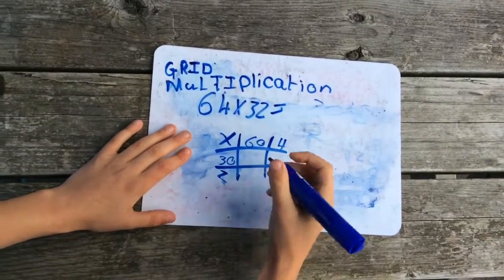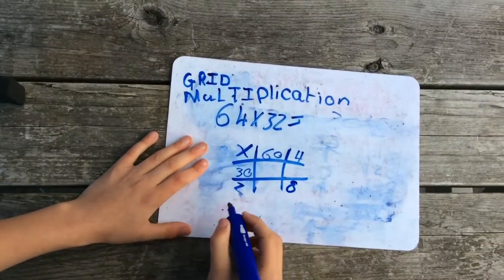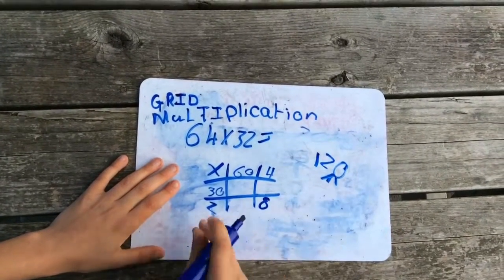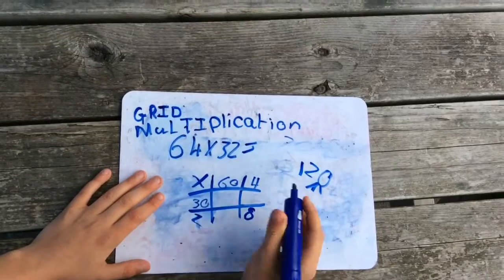So 2 times 4 is 8. 2 times 6 is 12. And then put the 0 there. So 120.